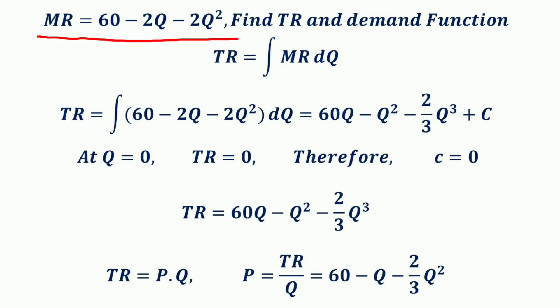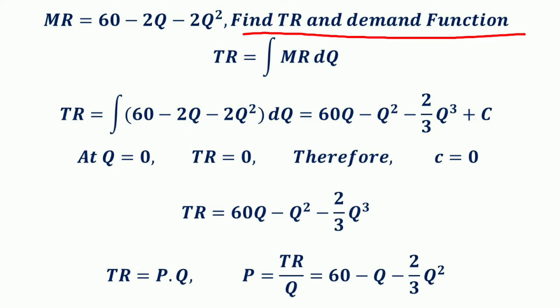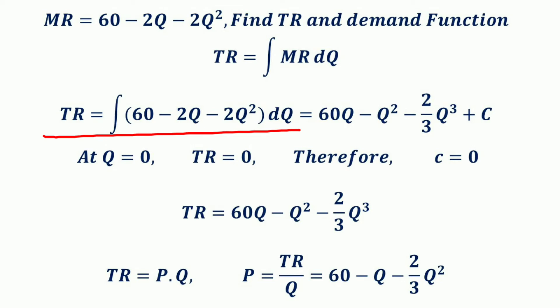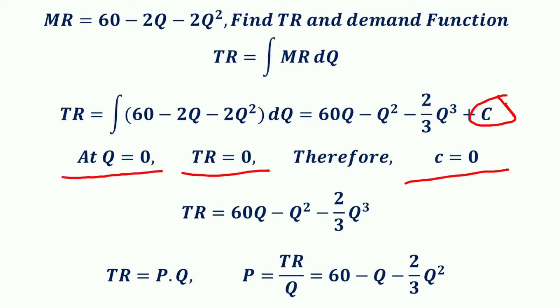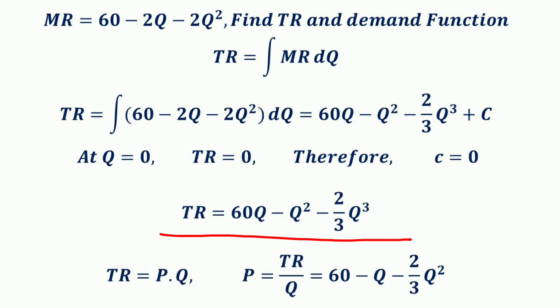Consider another example where the marginal revenue is given as MR = 60 − 2Q − 2Q², and we want to find the total revenue function and demand function. To find the total revenue function, we integrate the given MR with respect to Q: TR = ∫(60 − 2Q − 2Q²)dQ = 60Q − Q² − (2/3)Q³ + C. Since when Q = 0 the total revenue is also 0, C = 0. Therefore, TR = 60Q − Q² − (2/3)Q³.